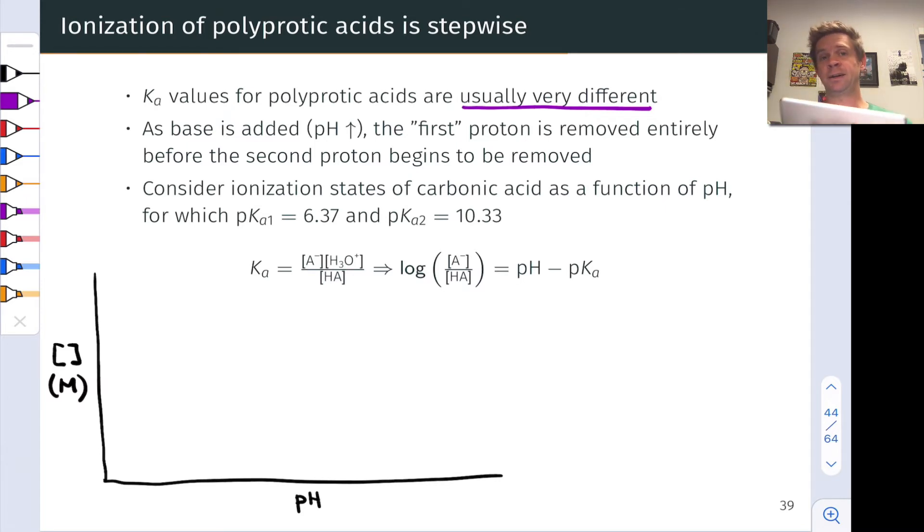Typically what happens as base is added, because the Ka values are spread so far apart, the first proton is removed entirely before the second proton begins to be removed appreciably.